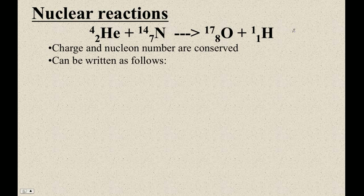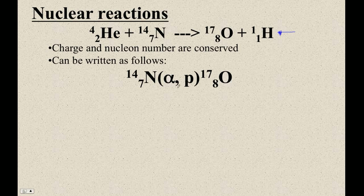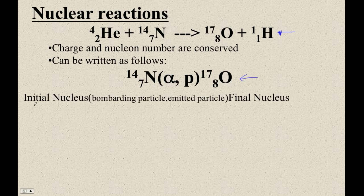We don't write them like that — that's how chemists write equations. But these are nuclear reactions, so we use a different notation. In general: it's the initial nucleus, the final nucleus — that's the big thing — and then the particle that is bombarding, probably from a particle accelerator. And then the particle that's given off, which sometimes is nothing, or maybe a gamma ray.